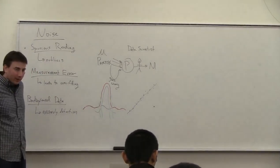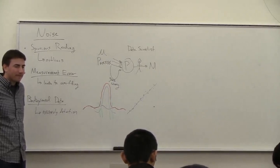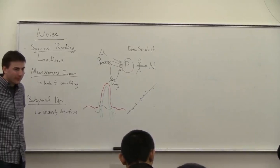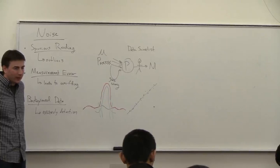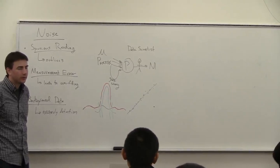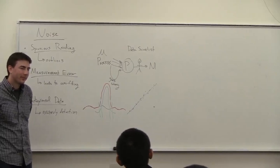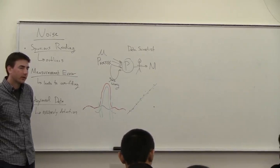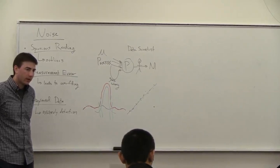A student raises a related example: at a hospital system they had to work with patient health information, de-identifying it and verifying it couldn't be traced back. One challenge was making sure they didn't have spurious readings — that the data wasn't corrupted as it came over. The question was whether de-identified data with measurement errors or spurious readings is a big topic, and whether the instructor had encountered anything related.